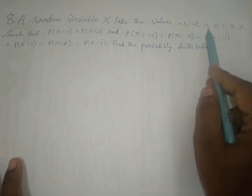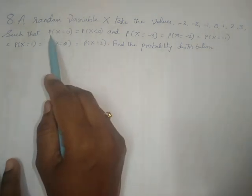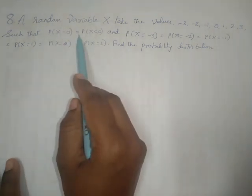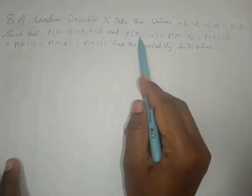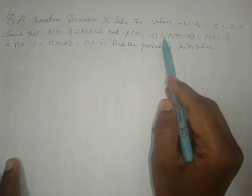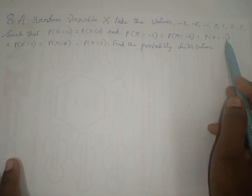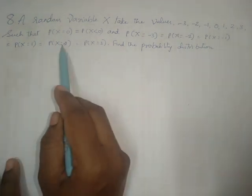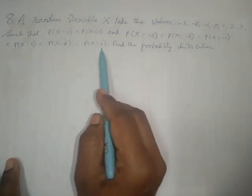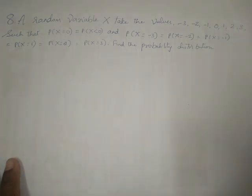minus 2, minus 1, 0, 1, 2, 3, such that P(X=0) equals P(X<0), and P(X=-3) equals P(X=-2) equals P(X=-1) equals P(X=1) equals P(X=2) equals P(X=3). Find the probability distribution.